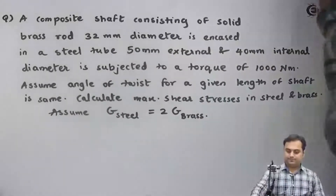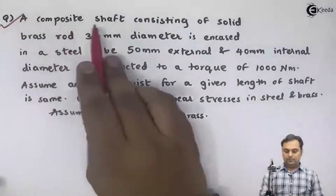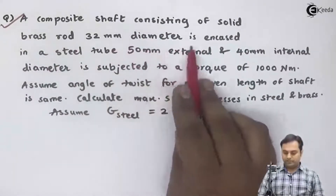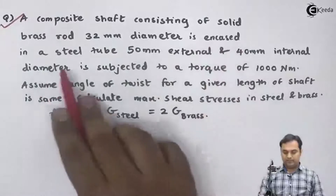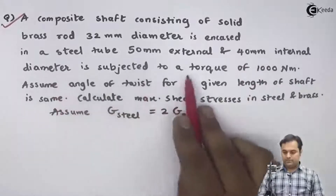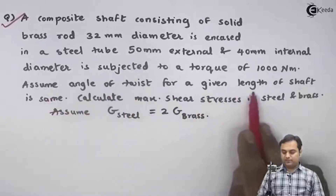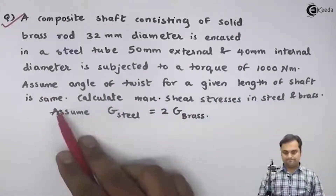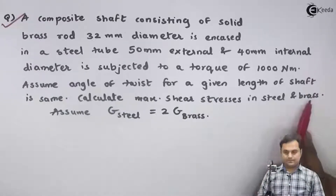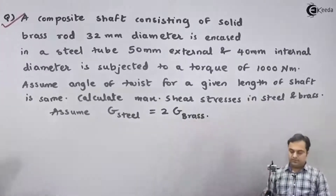Let us take the next question. It is given: a composite shaft consisting of a solid brass rod 32 mm diameter, encased in a steel tube of 50 mm external and 40 mm internal diameter, subjected to a torque of 1000 Newton meter. Assume angle of twist for a given length of shaft is same. Calculate maximum shear stresses in steel and brass. Assume G for steel is twice that of brass.